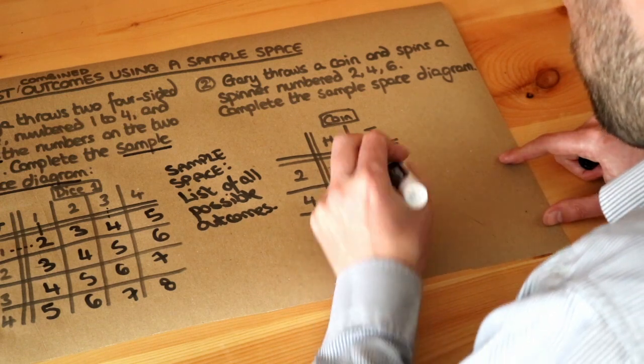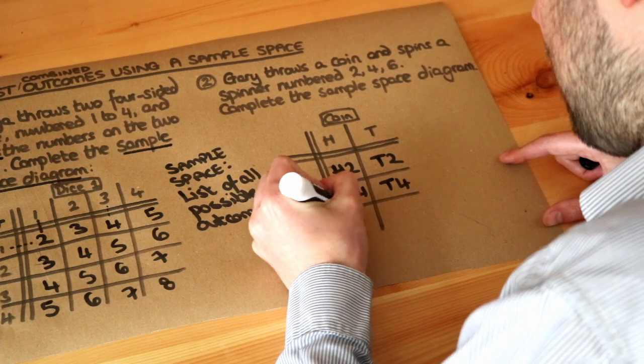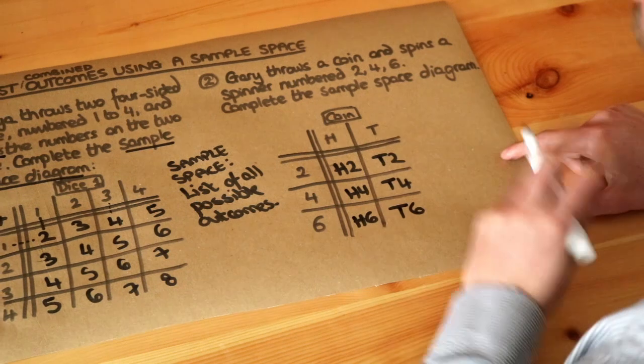And here we've got tails and a six, so T6. And that is the final completed sample space diagram.